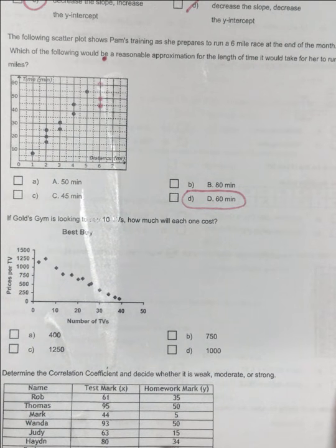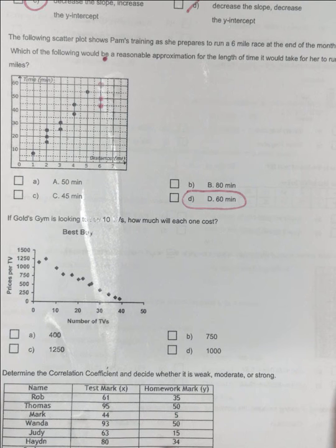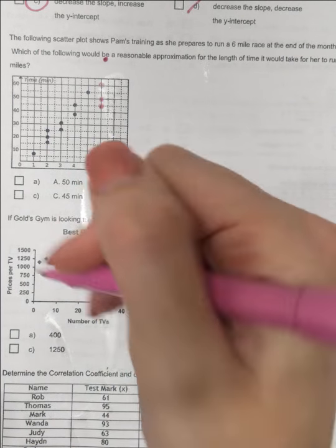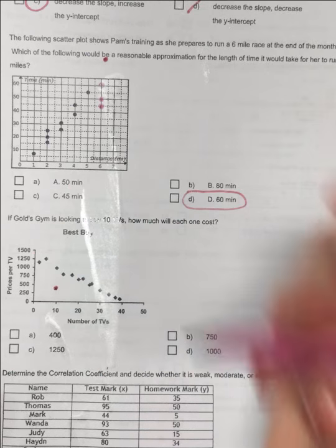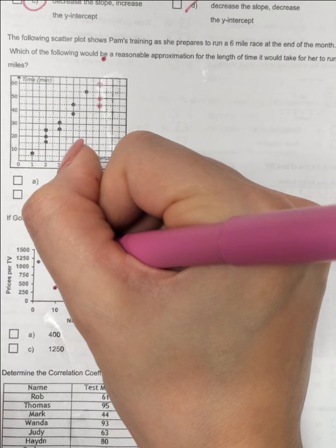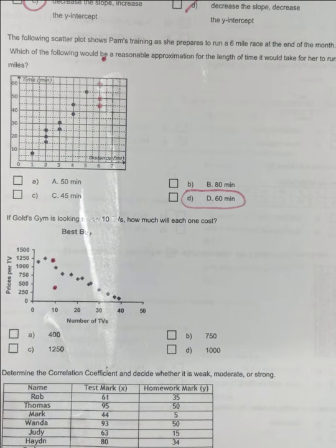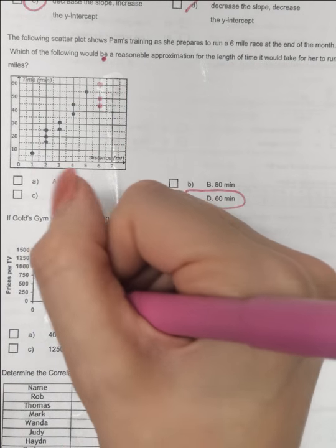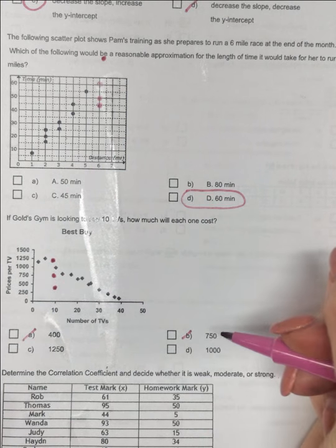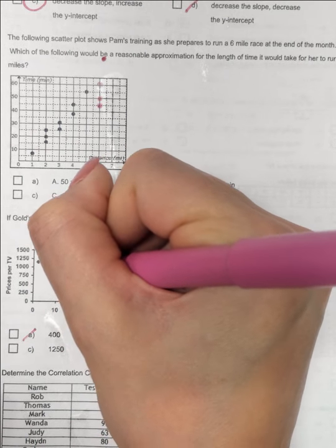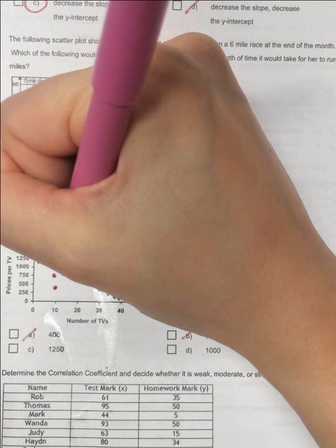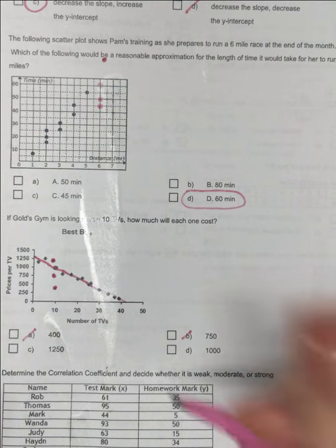Number three. If Gold's Gym is looking to buy 10 TVs, how much will each one cost? So we're going from 10 TVs, and we're going to make the approximation. So 400. At 10, 400 would be right here. That's way low. 12.50, that may work. Not too far off. 7.50, still too low. So these two I know are too low. 1,000, that one's right there in the middle of the data. If I was to draw a trend line, I would say it would go right through there, right there at that 1,000.